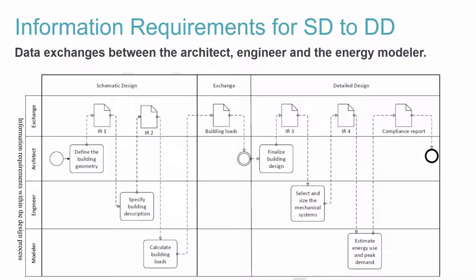If the results are not satisfactory, you go back and continue the loop, updating until it's right. Once you have the loads, you progress into finalizing the building design, selecting and sizing the mechanical systems based on those loads. Once the systems are sized and selected, the energy model estimates energy use and peak demand, then you submit compliance reports — whether ASHRAE 90.1 or whatever the client needs.